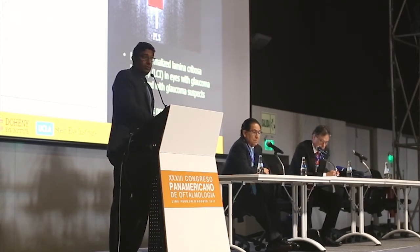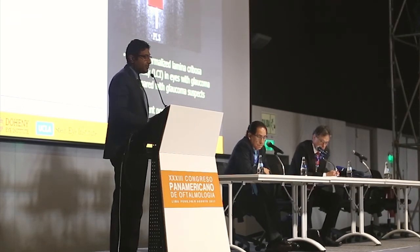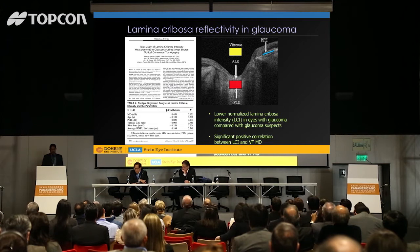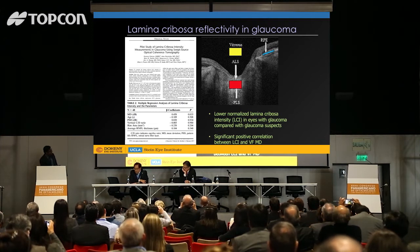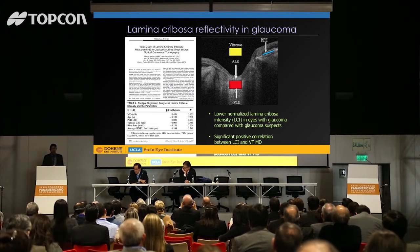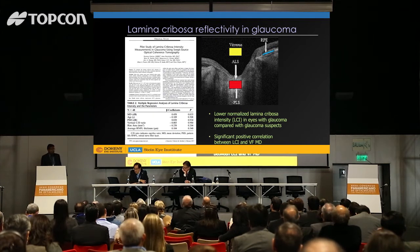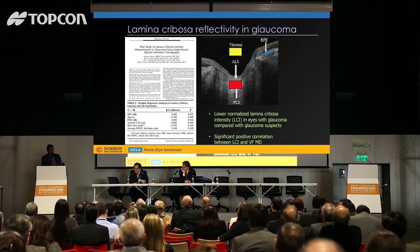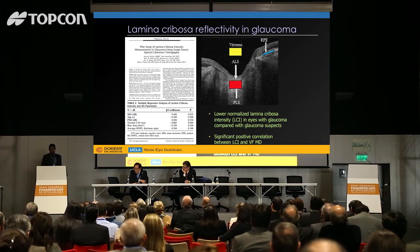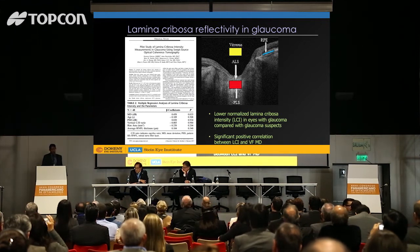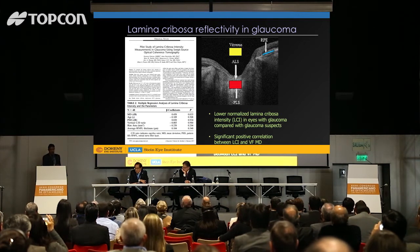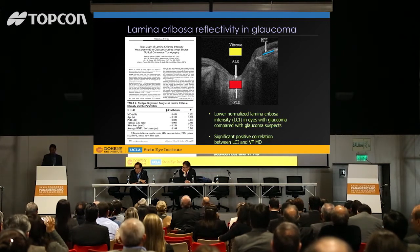We don't have to stop at the choroid. The lamina cribrosa is an area of great interest. We published a paper earlier this year in collaboration with our glaucoma group, in particular Vic Chopra. We studied normalized brightness of the lamina cribrosa — Joel Schumann has also done nice work in this regard. We observed that in patients with glaucoma, they actually had a lower normalized lamina cribrosa intensity compared to glaucoma suspects. We think it's because patients with glaucoma lose their nerve fibers, probably have more laminar pores, which are dark, contributing to an overall lower intensity. We found a nice correlation between lamina cribrosa intensity and visual field mean deviation.